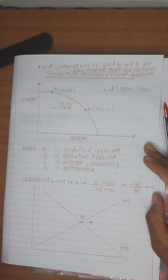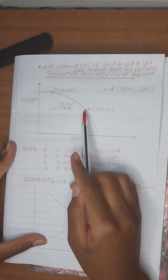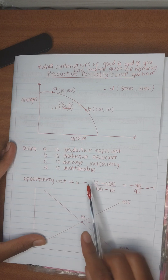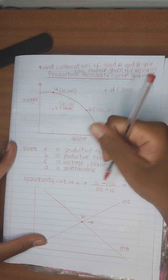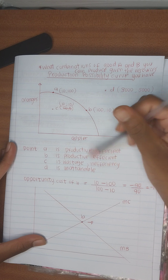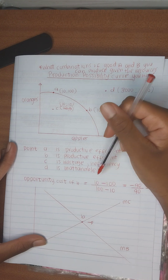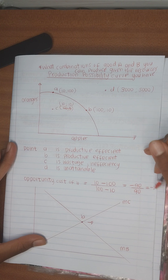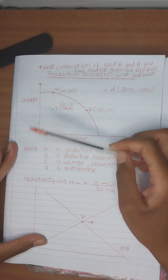Let us now calculate the opportunity cost of being at B — what we had to forego in order to move there. The opportunity cost of B equals the decrease in good A over the increase in good B. Looking at the Y-axis: you moved from 100 to 10, so that is 10 minus 100 over 100 minus 10, which gives negative 90 over 90, equal to negative 1. The reason for the negative answer is that you had to decrease one thing in order to increase another, which is exactly what the PPC tells you — to produce more of one good you have to forego another.